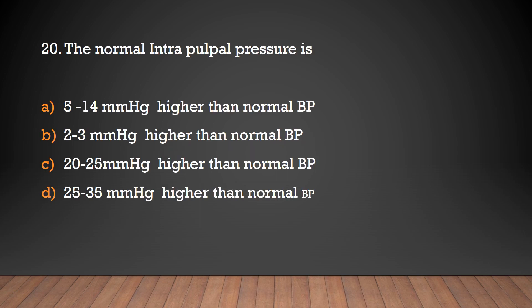The normal intrapulpal pressure is 20 to 25 mmHg higher than normal blood pressure.